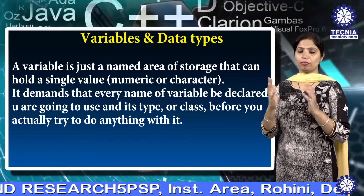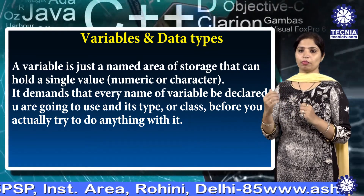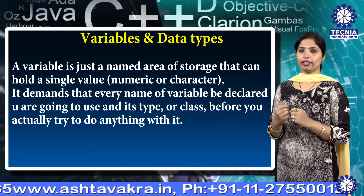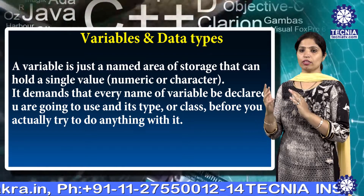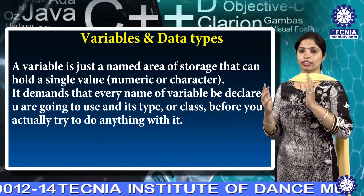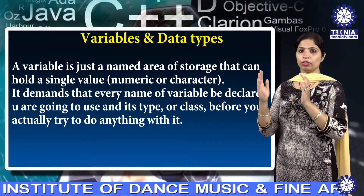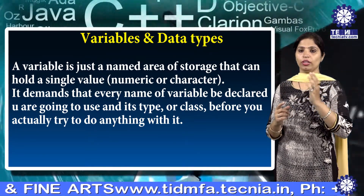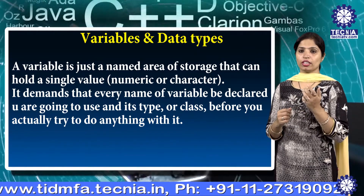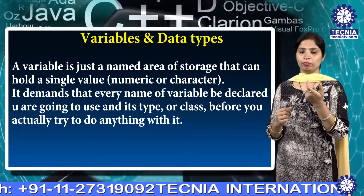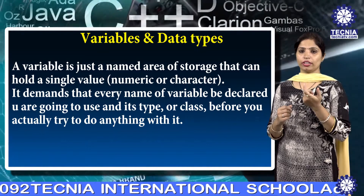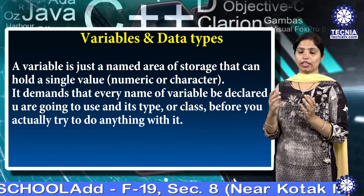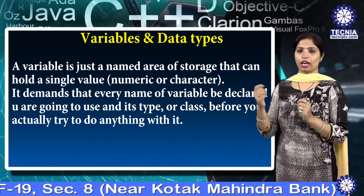In any language, the type of variable depends on the type of constant it can handle. An integer variable can hold only an integer constant, a real variable can hold only a real constant, and a character variable can hold only a character constant. The general form of the declaration defines the type — such as integer, float, or character — as well as the name of the variables like v1, v2, v3, and so on.